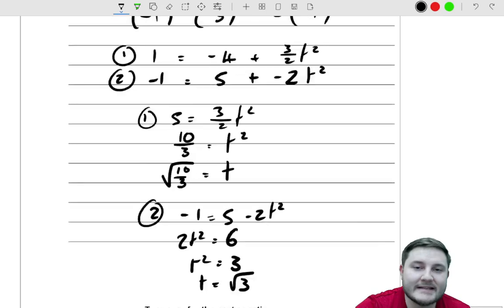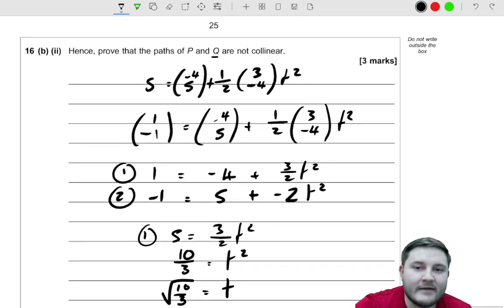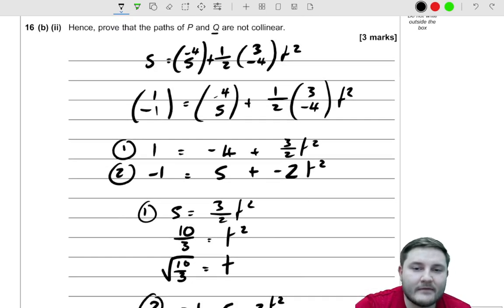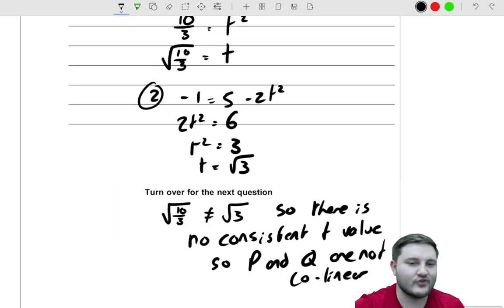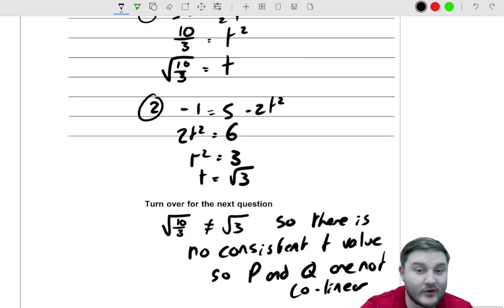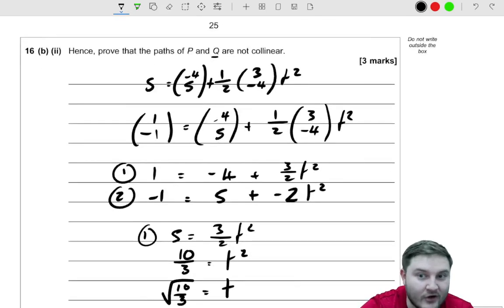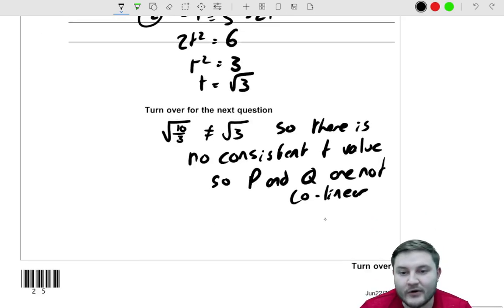So there is no consistent T value. So P and Q are not collinear. So the basic idea is that if it mattered, then you would be able to sub in. If they were collinear, you would be able to sub in the positional coordinate for Q in that expression we had for P. And you should be able to find a consistent T value. Whereas in this one, we don't. So they're just not collinear, which is what he asked us to show, to show that they're not collinear.